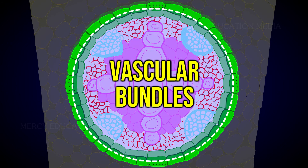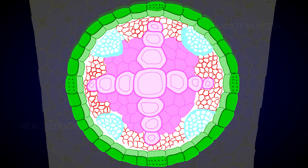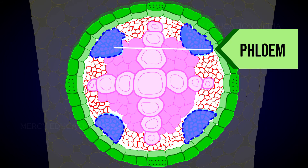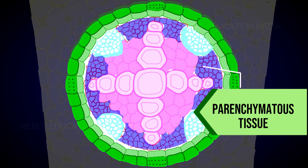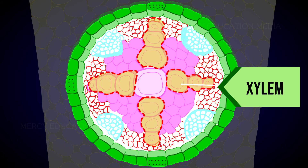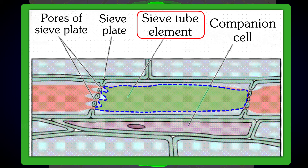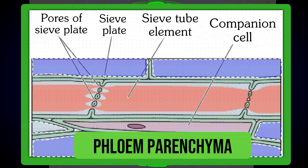Vascular tissues are in radial arrangement. The tissue by which the xylem and phloem are separated is called conjunctive tissue. In bean, the conjunctive tissue is composed of parenchymatous tissue. Xylem is exarch. The number of protoxylem strands is 4, so the xylem is called tetrarch. Each phloem patch consists of sieve tubes, companion cells, and phloem parenchyma.